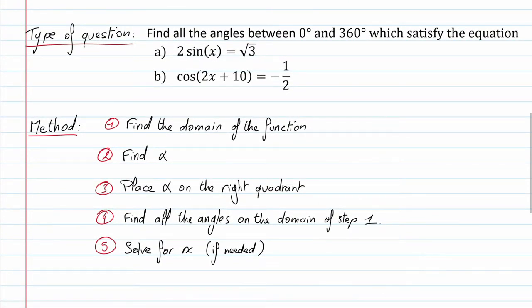The questions you're going to solve are of the type: find all the angles between 0 and 360 degrees which satisfy the equation 2 sin x equals root 3, or cosine of 2x plus 10 equals negative 1 over 2.